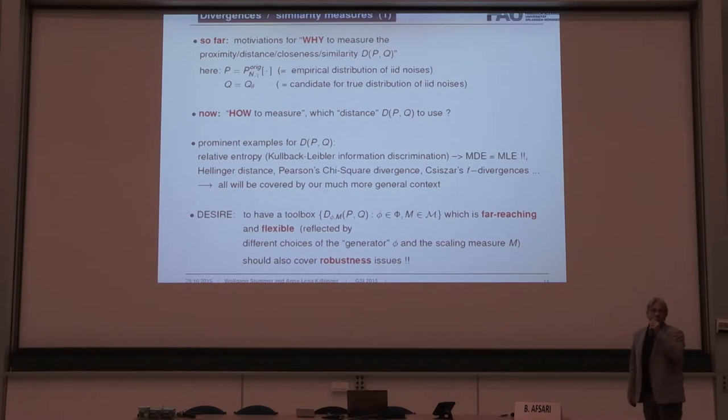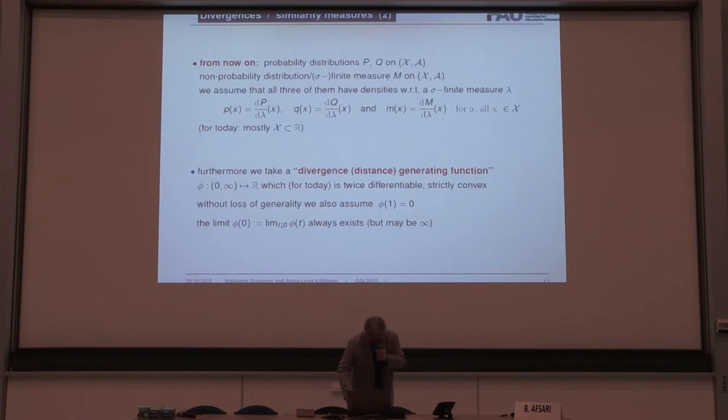Also, Bregman distances are covered by our context. We are much more general. The idea is not only to have one distance, but a family of distances. Not only measure once, but more often, and the flexibility is reflected by a generator, phi, and a scaling measure, M. For instance, it should cover robustness issues, which is very important. And we can do that in a very nice structured way.